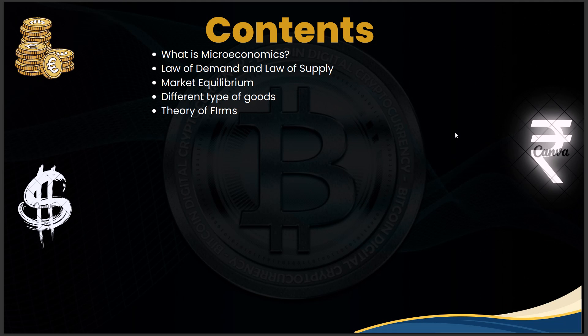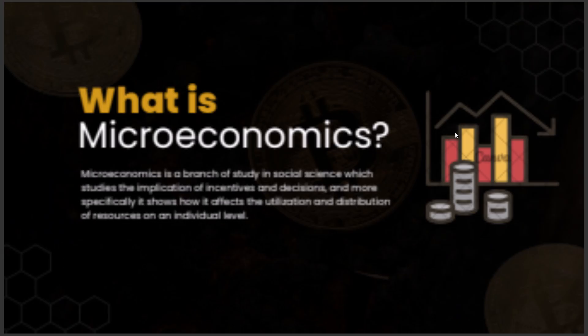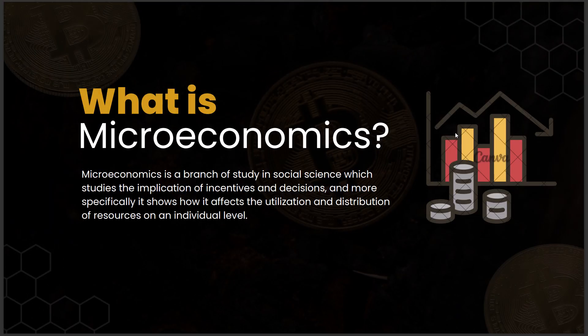In this lecture we'll be looking at what is microeconomics, law of demand and supply, market equilibrium, different types of goods, and theory of firms. Microeconomics is a branch of study in social science which studies the implications of incentives and decisions, and more specifically shows how it affects the utilization and distribution of resources on an individual level.